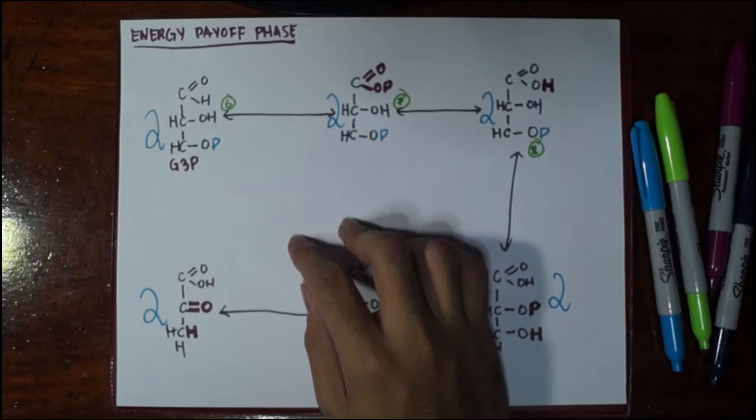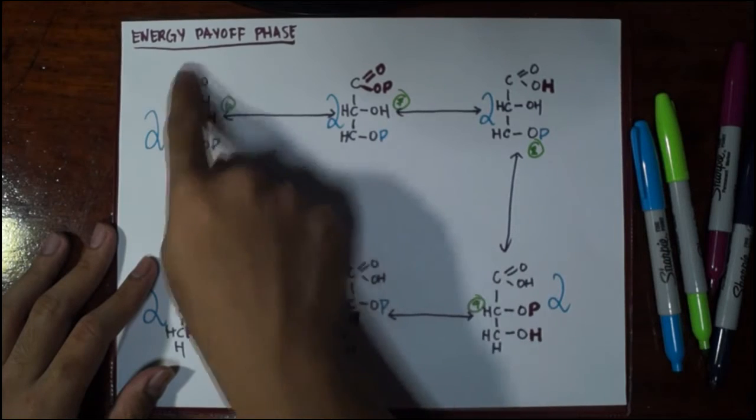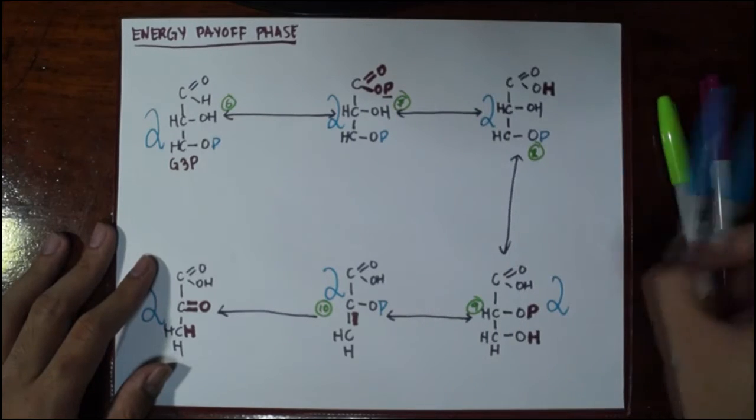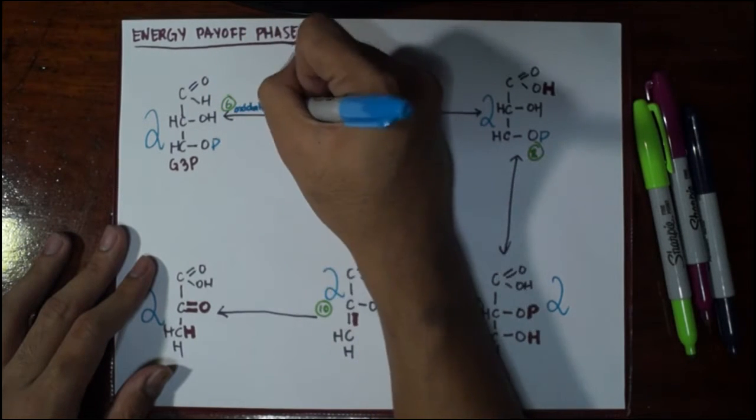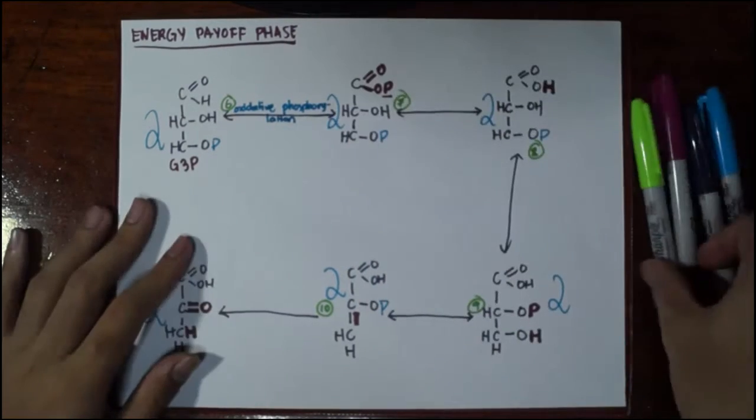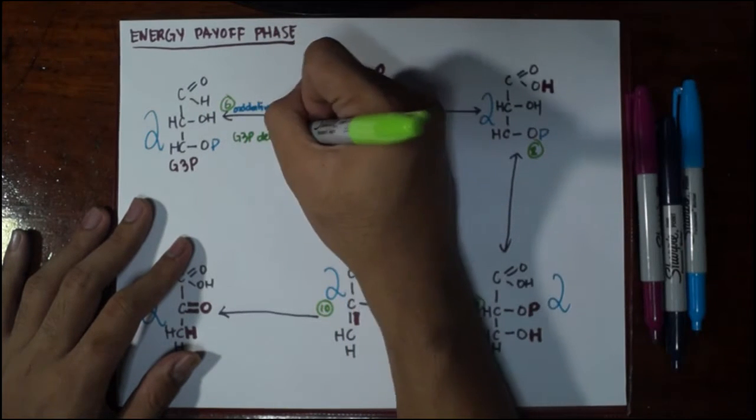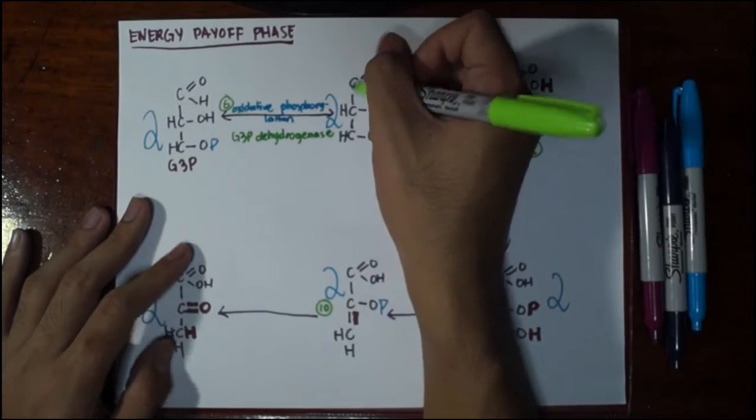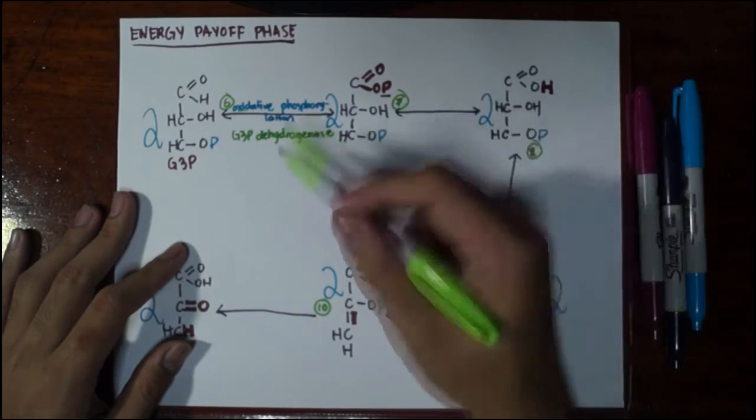So we go with the five reactions in the energy payoff phase. Step number six: what happened is that after step number six, the aldehyde group became a carboxyl group. But in addition to it being a carboxyl group, you added a phosphate group. So there's oxidation and also phosphorylation. The entire name is oxidative phosphorylation.